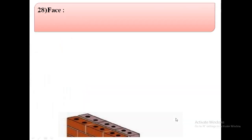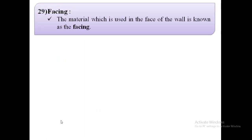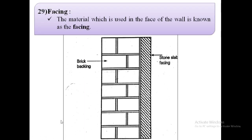The next term is face. The surface of a wall exposed to weather is known as the face. The next term is facing. The material used in the formation of the face of the wall is known as the facing. As shown in the image, this is the stone slab facing.